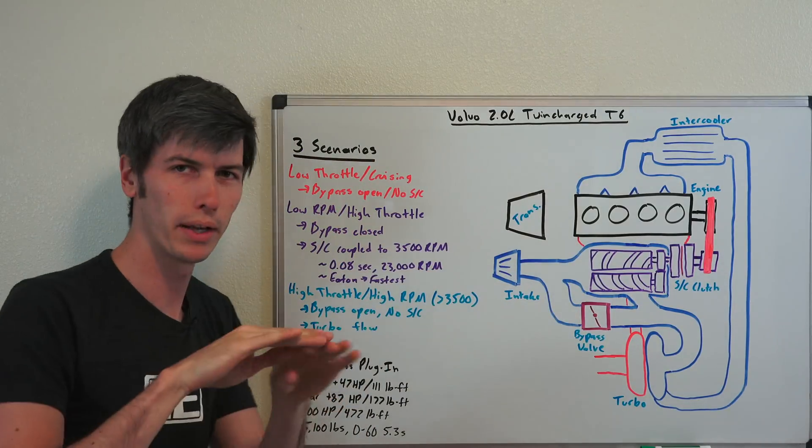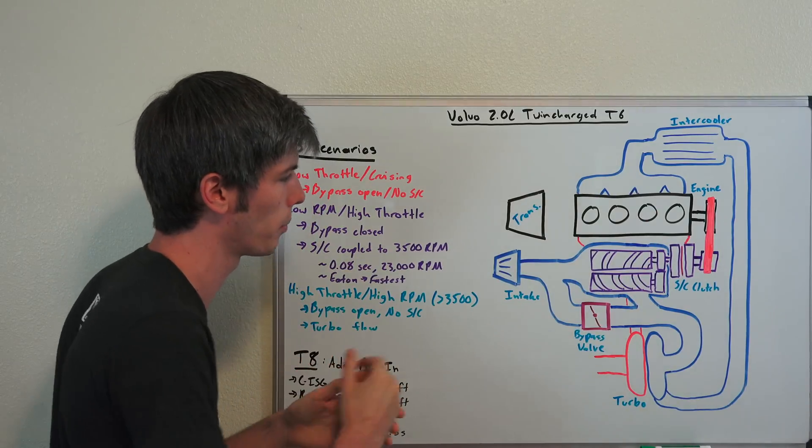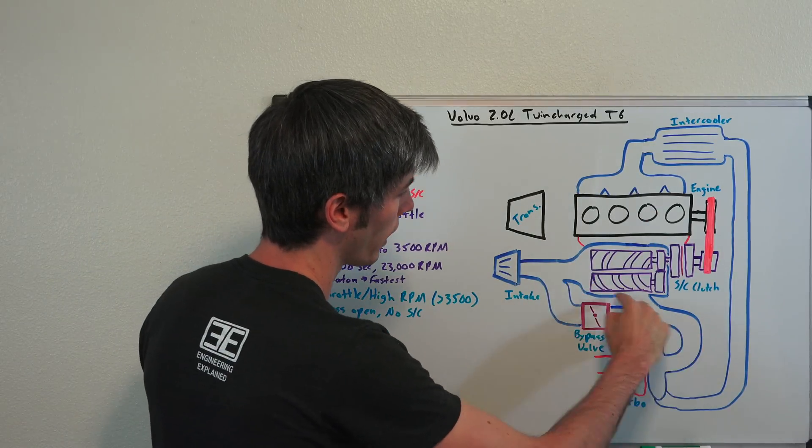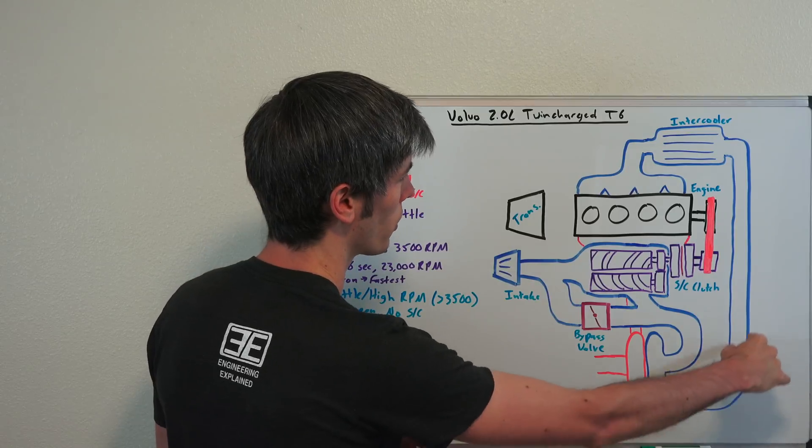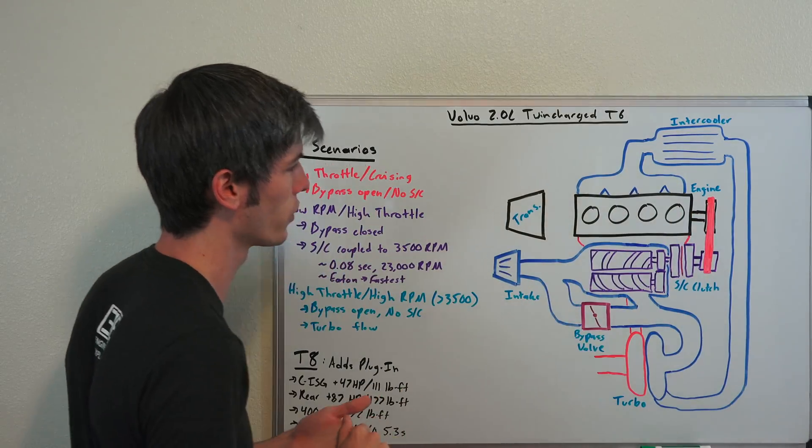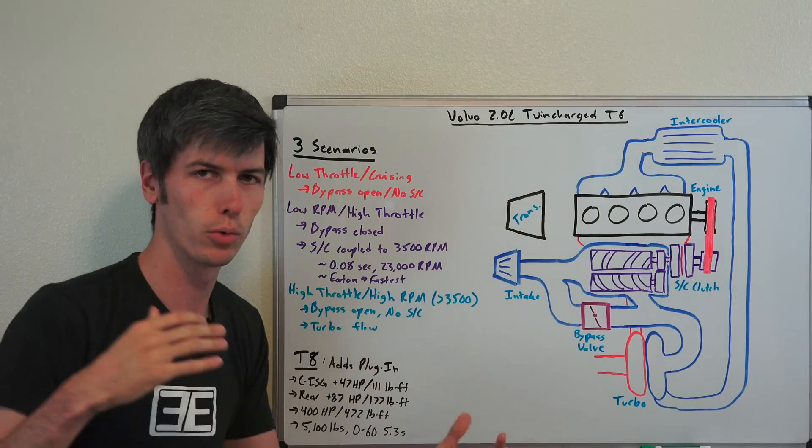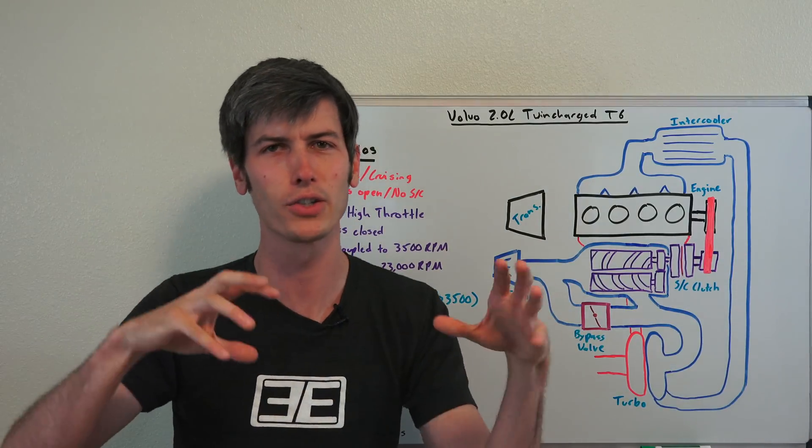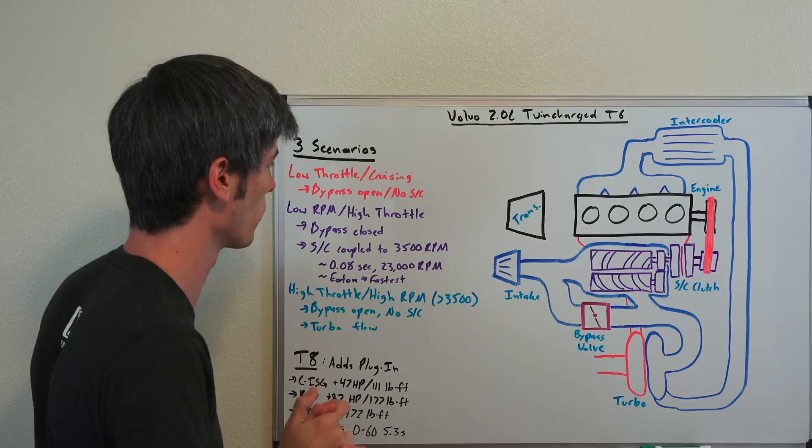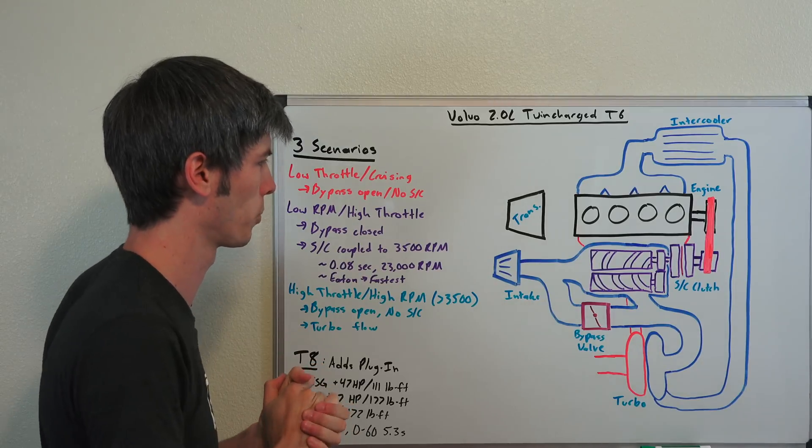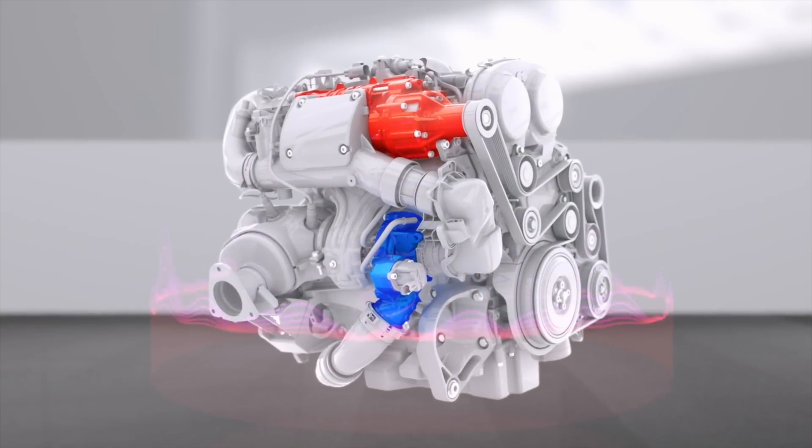That torque curve remains totally flat from 2,200 RPM all the way to 5,400 RPM. And so you have that airflow come through, pass through this bypass valve right here, into your turbocharger, through the intercooler, and into the engine. So you have this nice, smooth transition where you maintain peak torque. And so at really any moment within the engine RPM, you can get immediate torque and get the response that you're looking for without waiting for that turbo to spool up because you have the supercharger to take its place in those low RPM scenarios.